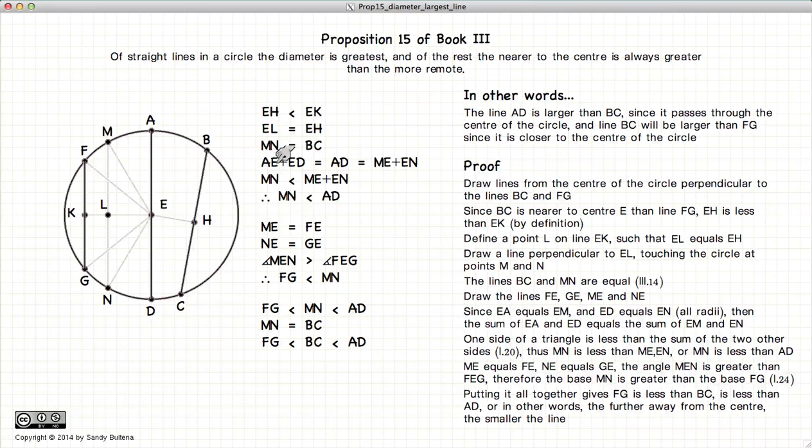So finally, we have this relationship between the lines, which is that the diameter of the circle AD is larger than BC, and since BC is closer to the centre, BC is larger than FG, thus demonstrating this proposition.